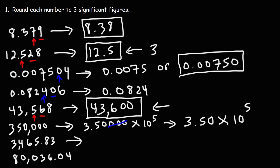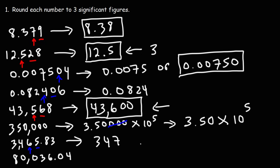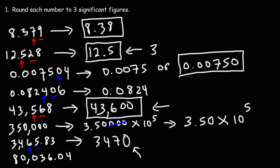Moving on: 3,465.83 rounded to three significant figures. We focus on the third significant digit, which is a 6. Looking at the number to the right — that's a 5 — so we need to round the 6 up to a 7. We have 3, 4, and 7. Since 347 is nowhere close to 3,465.83, we add a zero to get 3,470. These two numbers are very close in value, and we have three sig figs, so this answer is satisfactory. We don't have to convert to scientific notation here.